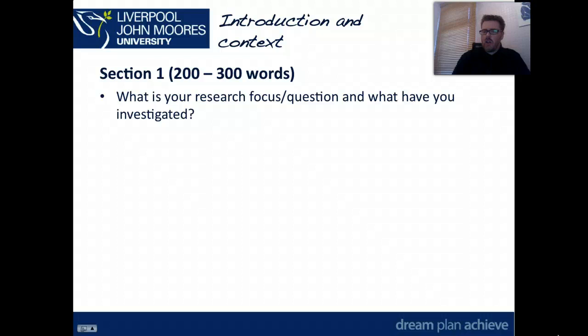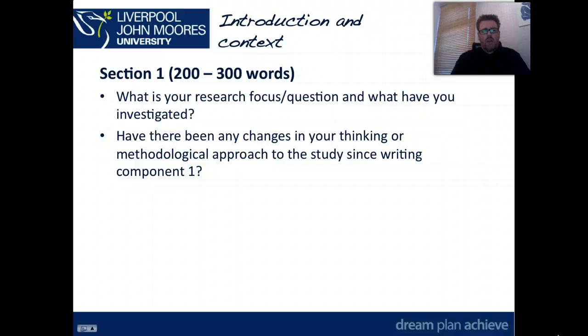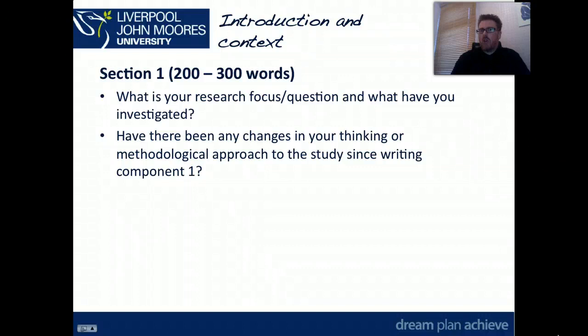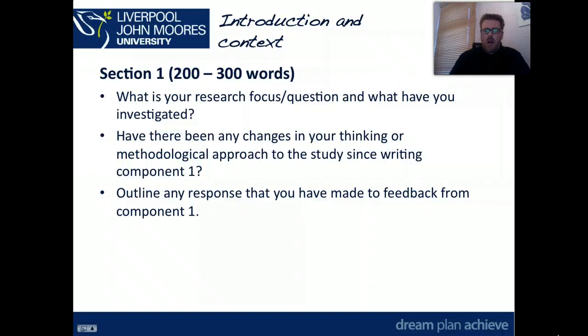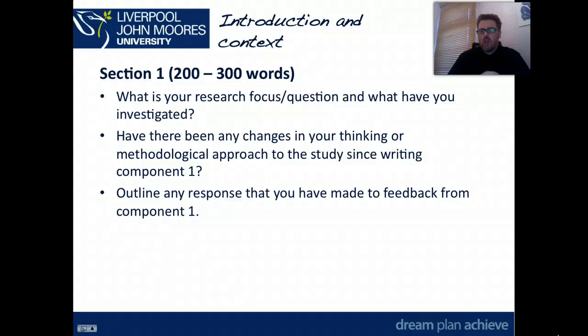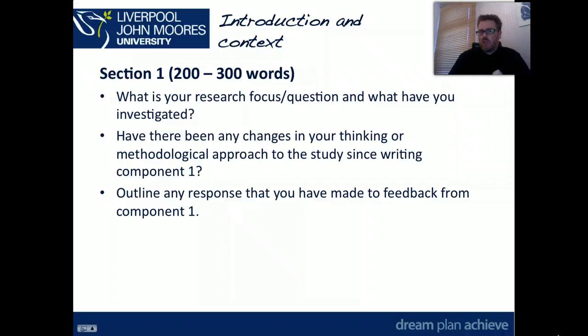You're also going to say in this section if there have been any changes in your thinking or your methodological approach — that's how you gather data — since writing component one. It's quite possible that's changed because you wrote component one before your phase three placement. You'll also outline any responses you've made to feedback from component one. If you look at the assessment criteria grid for this component, you'll notice that's one aspect mentioned within it. So it's wise to highlight specifically where you've responded to that feedback.